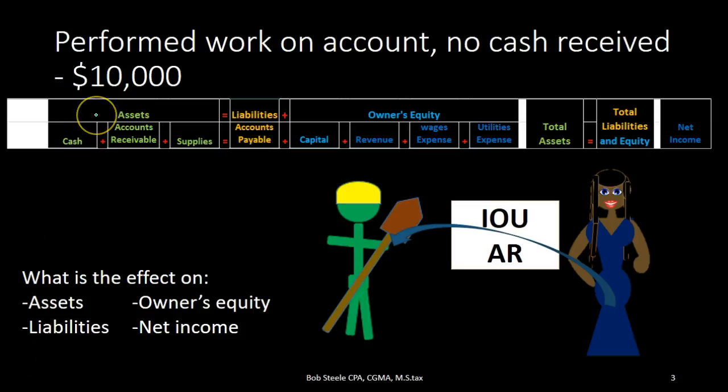The accounting equation is assets equal liabilities plus equity. It's important to remember what type of accounts are asset accounts, what type of accounts are liability accounts, and what type of accounts are equity accounts.